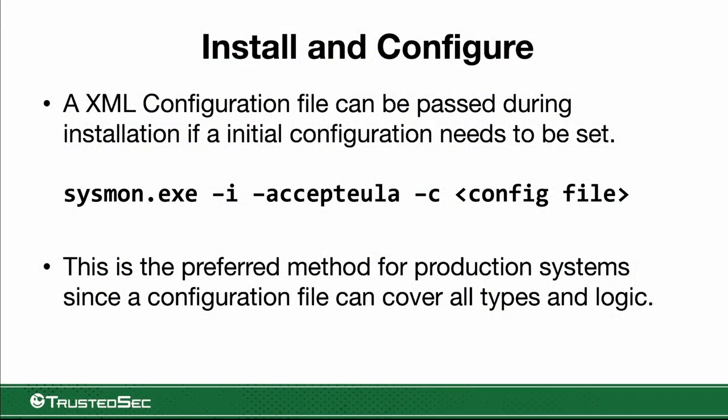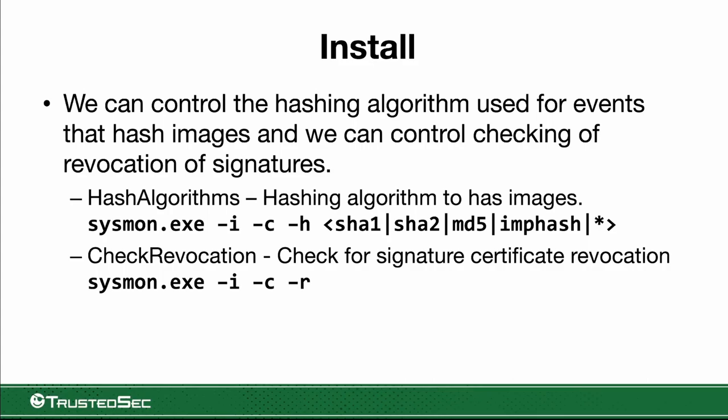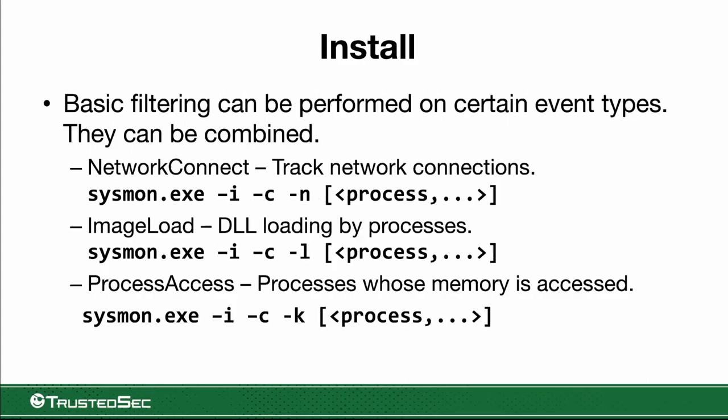If we want to apply a configuration file, we can do sysmon minus I accepteula minus C and apply the configuration file. Alternatively, we can do minus C to apply additional parameters, then minus H to specify hashing algorithms — SHA1, SHA2, MD5, import hash, or all available algorithms. We can also enable revocation checking for image signatures with minus C minus R during installation. There are additional parameters for network connection, image load, and process access, but honestly in my experience, customers don't use these much — mainly for research or quick troubleshooting tests.